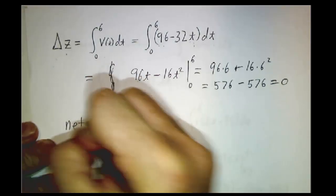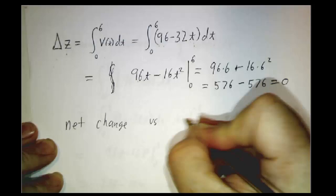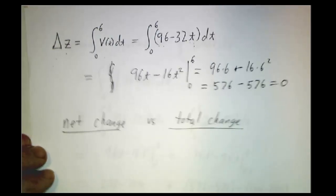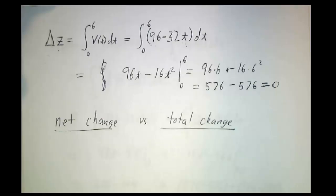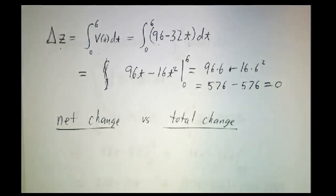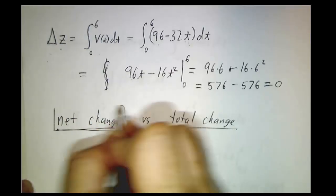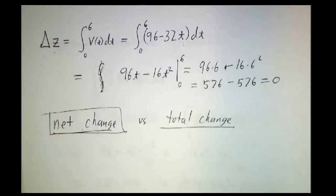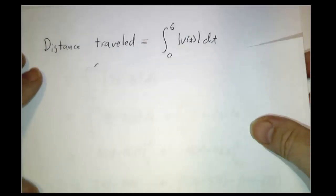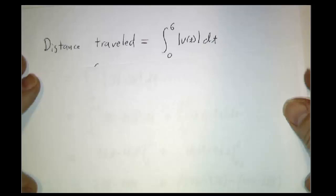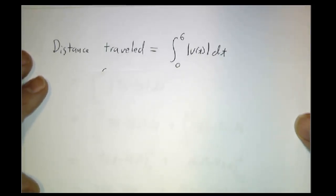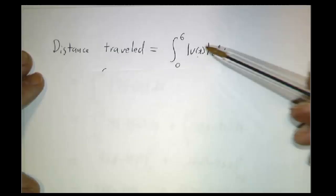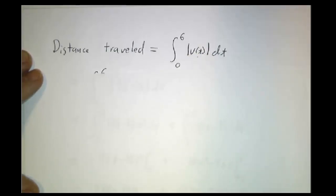This illustrates the difference between net change and total distance traveled. If you want to know the total distance — counting how far it went going up and then going down — you don't take the difference. The net change theorem gives net change as the integral of the derivative. But for total distance traveled, you integrate the speed, not the velocity. No matter what direction you're going, you accumulate miles at whatever speed you're going times time. So you integrate the absolute value of velocity to get total distance traveled.